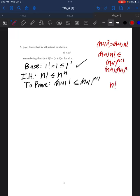So now I see all I need to prove is that n factorial is less than n plus 1 to the n, but I know that n factorial is less than or equal to n to the n, and clearly n to the n is less than or equal to n plus 1 to the n.